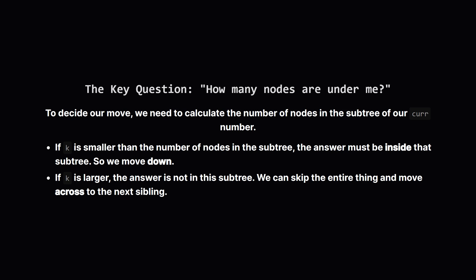So we can skip all 5 of them in one go, and move across to the next number which is 2. We'd then subtract the 5 we skipped from k, and continue our search from there.